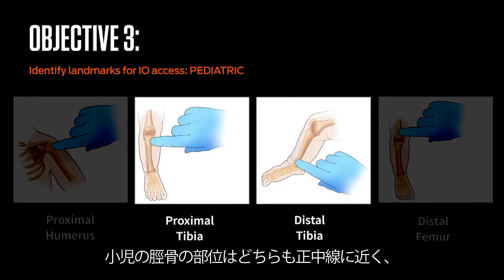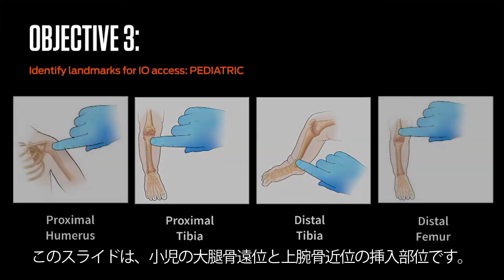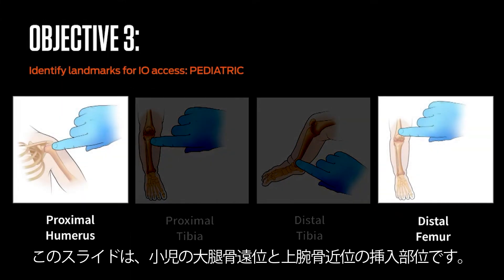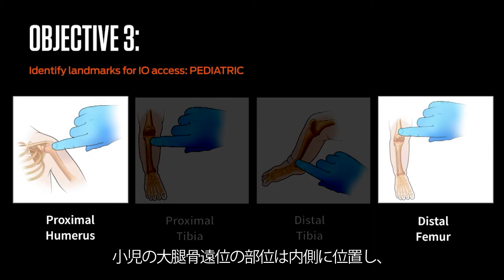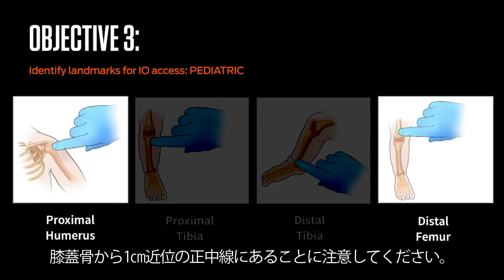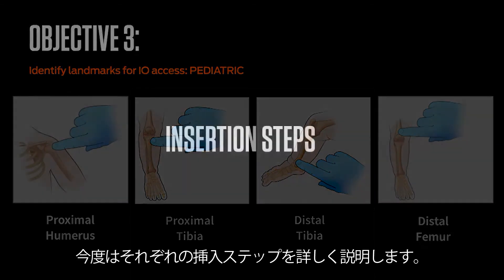Note that each site on the pediatric tibia is located medially and approximately 1 cm from the adjacent joint. This slide illustrates the pediatric distal femur site, located medially midline 1 cm proximal to the patella. Note that the pediatric proximal humeral site is located laterally and approximately 1 cm from the adjacent joint.